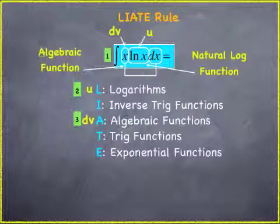LIATE is an acronym. Each letter stands for a different type of function. So you determine what functions you have, and depending on the order, the hierarchy where they fall out on LIATE, that will tell you which one is u and which one is dv.